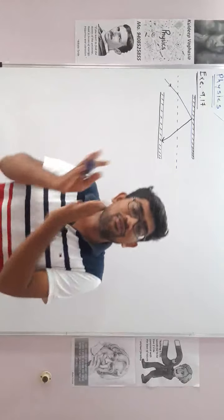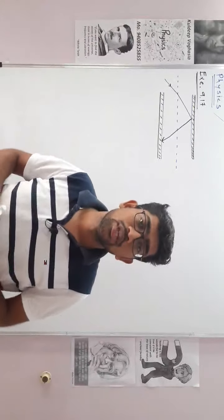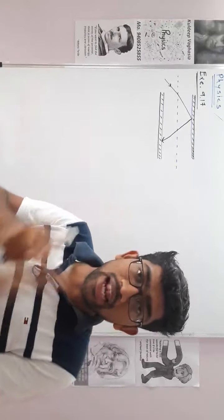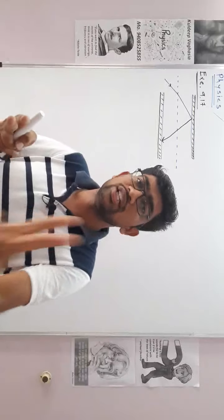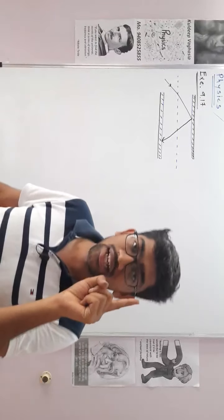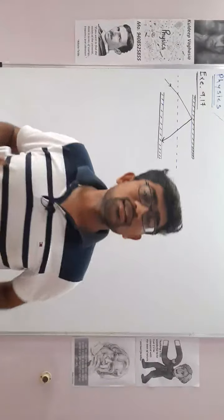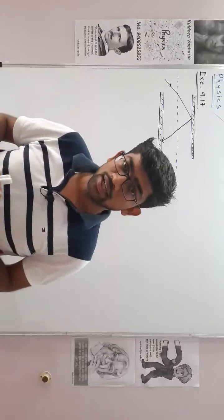Total internal reflection is the principle on which optical fiber operates. There are two conditions for total internal reflection. First condition: the ray should travel from denser medium to rare medium. Second condition: the incident angle should be greater than the critical angle. Only then will total internal reflection occur.